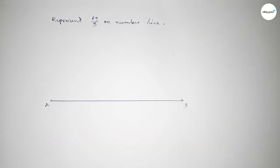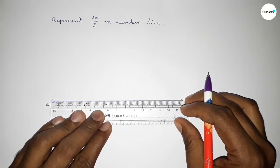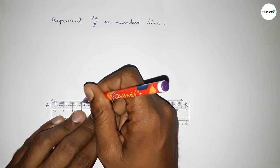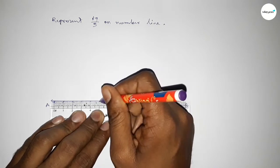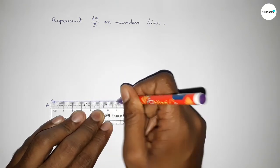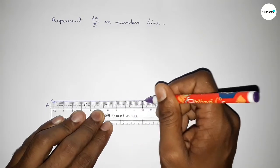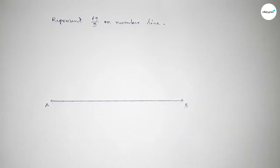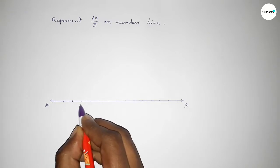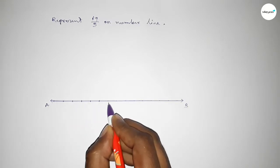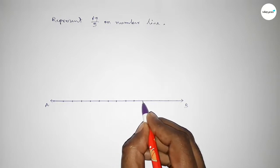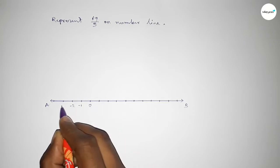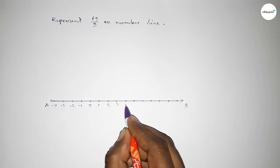Drawing a line and taking arrow marks on both sides — this is the AB line. Next we have to mark the numbers on the line using a scale. The starting number is zero; on this side minus one, minus two, minus three, minus four, and on this side one, two, three, four, five, six, seven, eight, nine, ten.